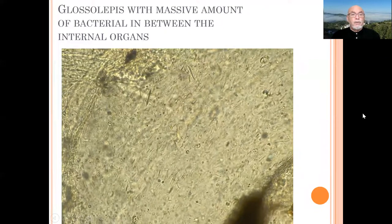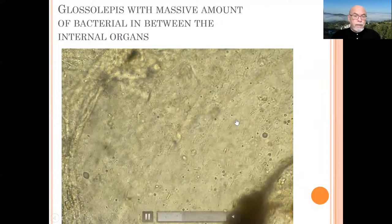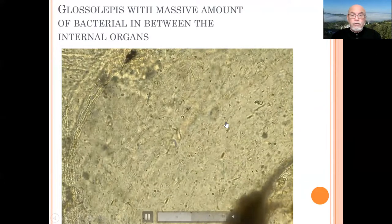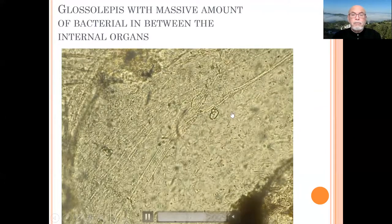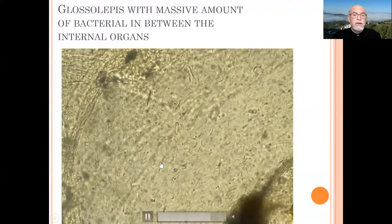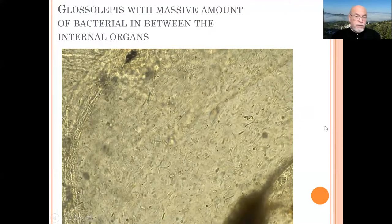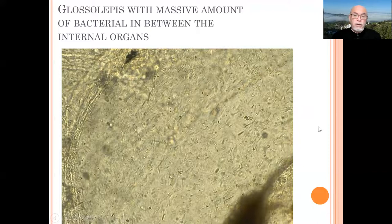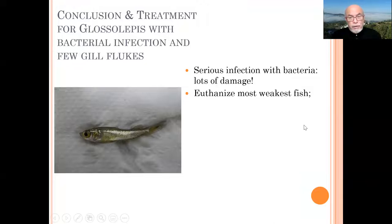Looking further in the organs, we saw a bunch of bacteria — rod-shaped bacteria and pointed bacteria. So it's quite a mix of problems. This one particular fish had bacteria, parasites, and was very weak.